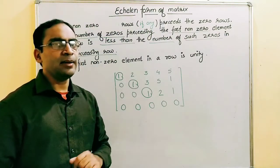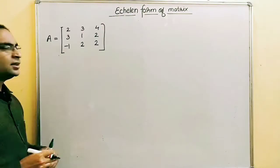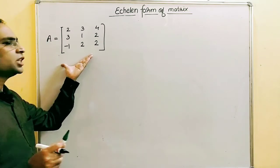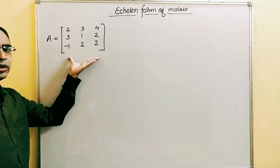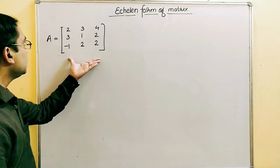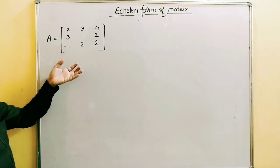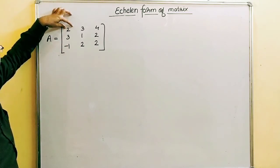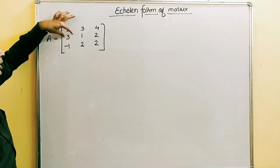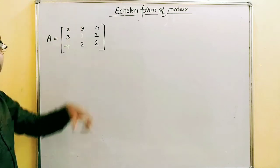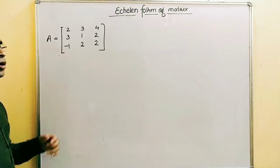Now let's see with an example how we can convert a matrix into echelon form. Let's consider this matrix and convert it. Before converting, let's analyze whether it is already in echelon form. No, it is not, because it violates rule number three — the first non-zero element must be unity. Here the first non-zero elements are two, three, and minus one, so the third rule is violated. Let's convert this into echelon form.